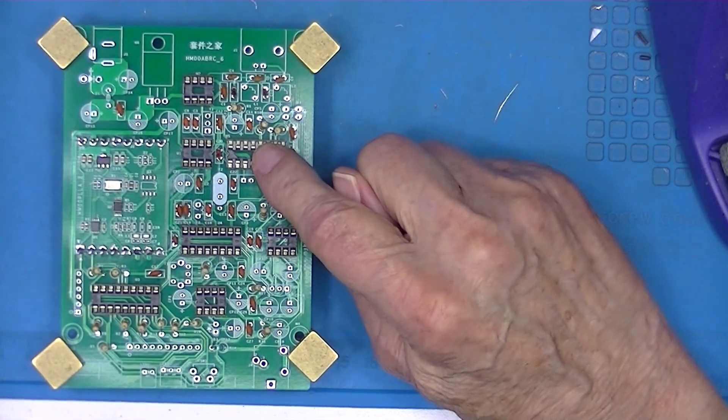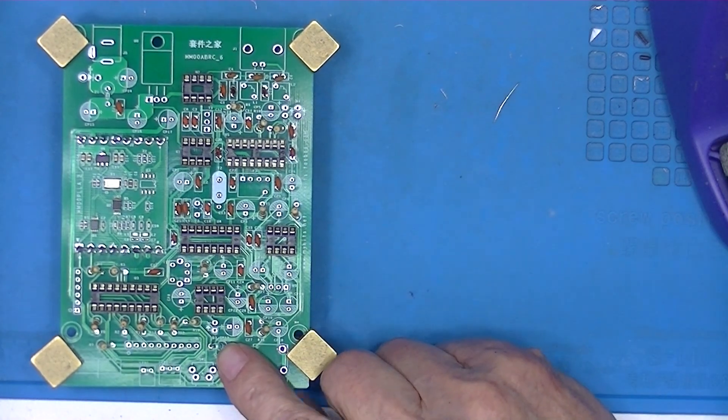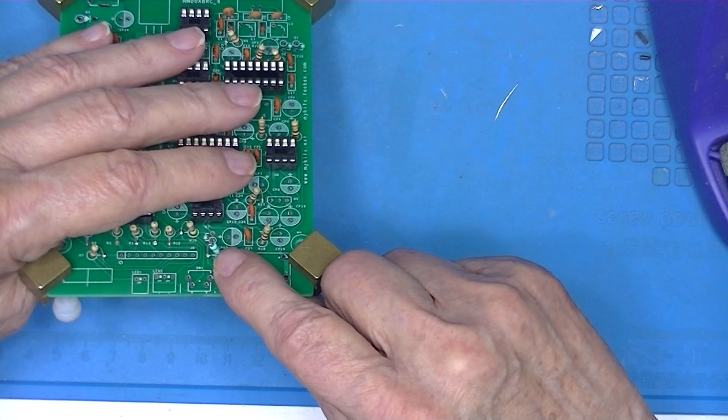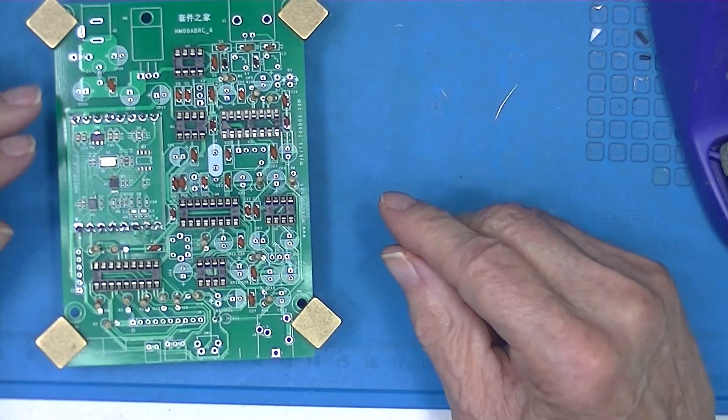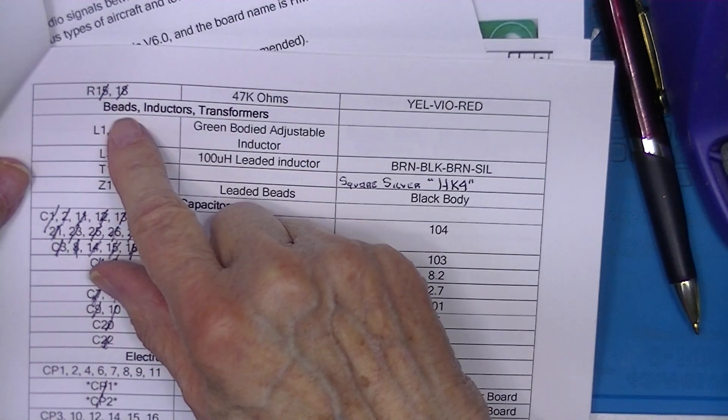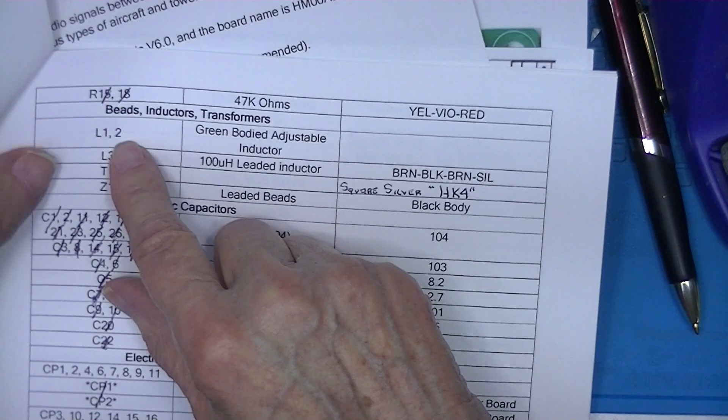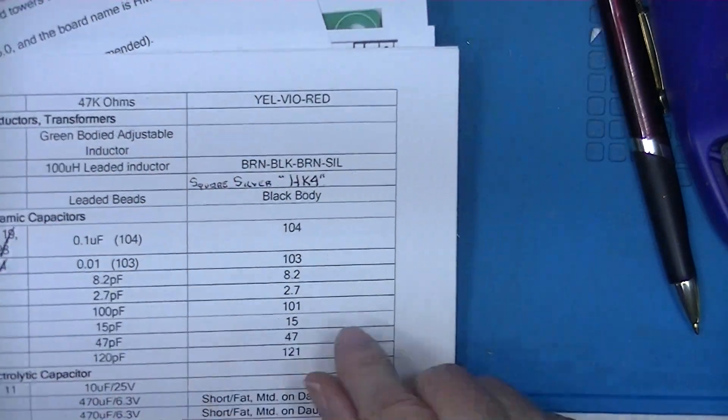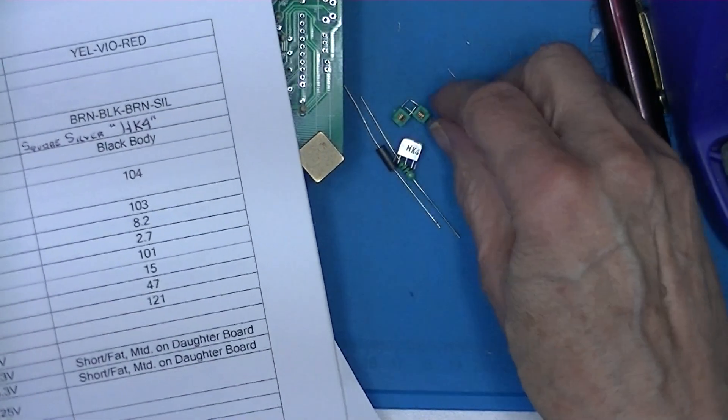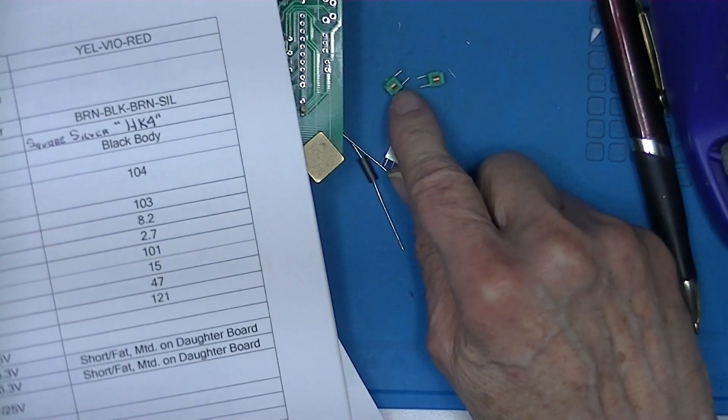This is the first component I found missing. This resistor that I thought was missing in part one, it turned up, don't ask me how. I'm going to install the beads, inductors, and transformers. L1 and L2 are listed as having green bodies and being adjustable inductors.